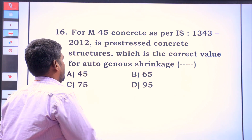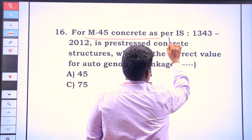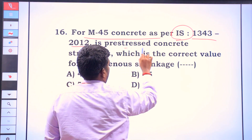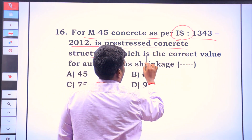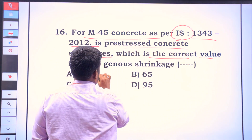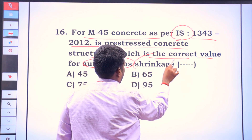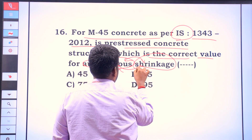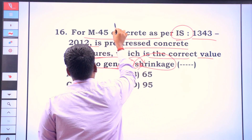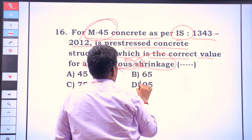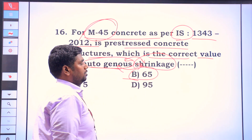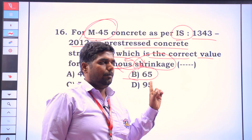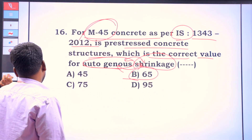For M45 concrete as per IS-1343, 2012, in pre-stressed concrete structures, the correct value for autogenous shrinkage — the main key point is what is autogenous shrinkage and what is its value for grade M45. The answer is 65.